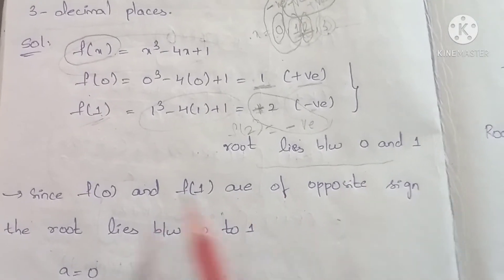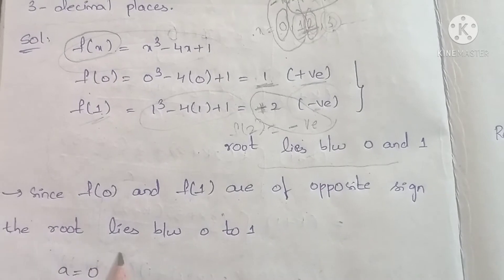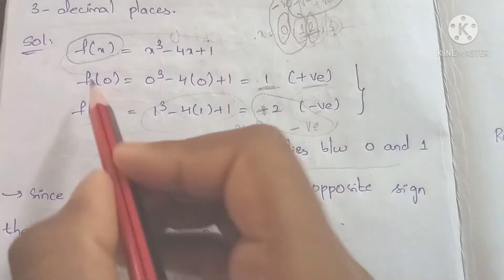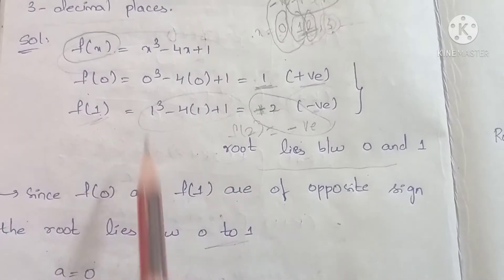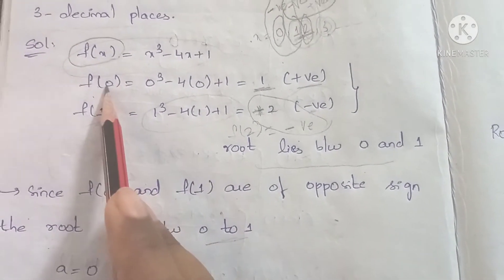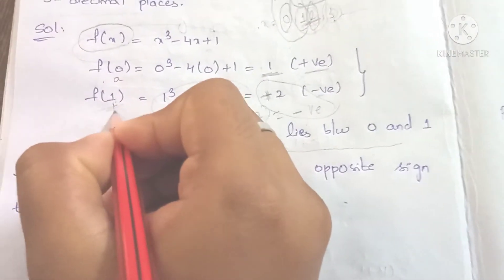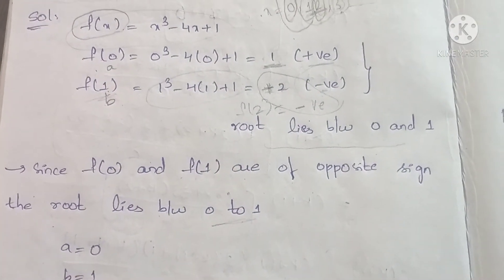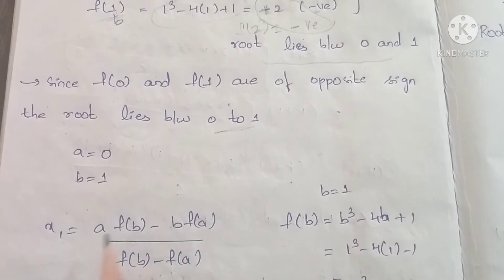Since f(0) and f(1) are on opposite sides, the root lies between 0 and 1. So we set a = 0 and b = 1. These are the root interval values for our first iteration.